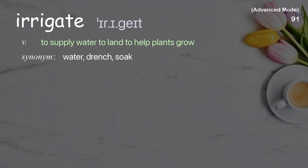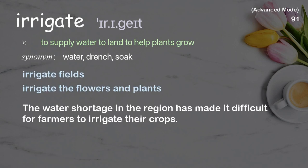Irrigate: To supply water to land to help plants grow. Examples: Irrigate fields. Irrigate the flowers and plants. The water shortage in the region has made it difficult for farmers to irrigate their crops.